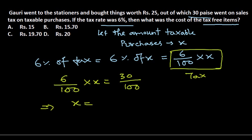Solving the equation, X equals 5. So the taxable purchase amount is rupees 5. Now, for the cost of the tax-free item: the total amount she spent was rupees 25, which includes both the tax paid and the purchase price.